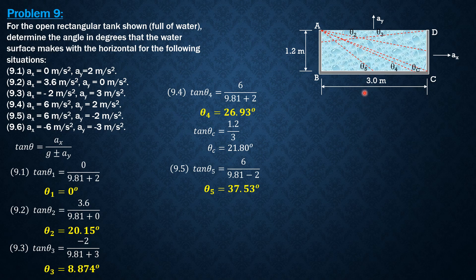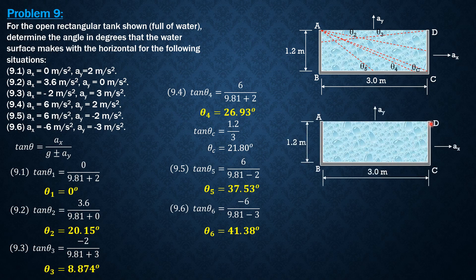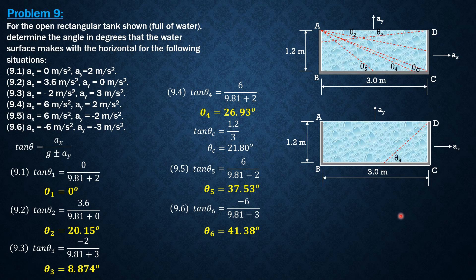And finally, tangent of theta 6 is equal to negative 6 over 9.81 minus 3. But again, in the calculation, let's just make it positive 6, and it should be sloping down to the left. 41.38, which is greater than 37.53. So it is shown here, down to the left. And it should be the resulting surface. And this is theta 6.